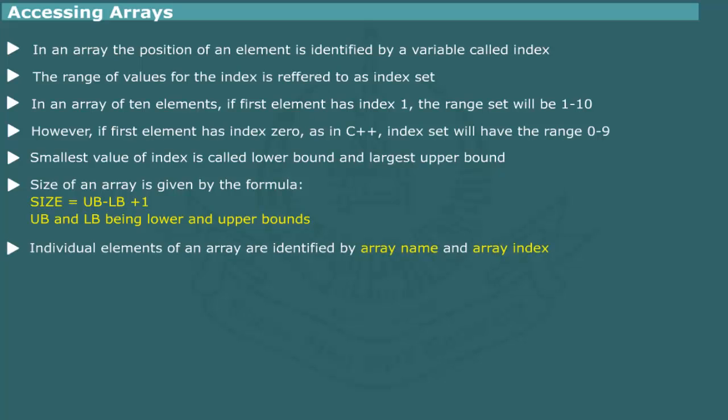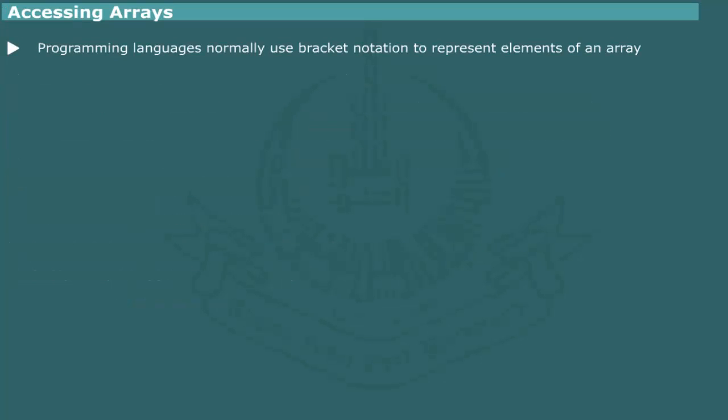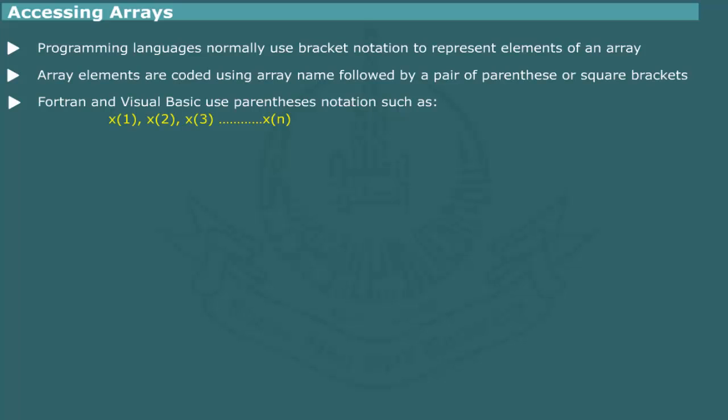The individual elements of an array are identified by the array name and array index. For this purpose, different notations are used. In the mathematical description of an array, the subscript notation is used. For example, the elements of array x consisting of n elements are denoted by the sequence. The programming languages, however, use bracket notation for array elements. The elements are defined by the array name followed by either parenthesis or a pair of square brackets that enclose the index value. Fortran and Visual Basic use parenthesis notations such as C, C++ and Java use square bracket notation. Thus, elements of array x are denoted by.